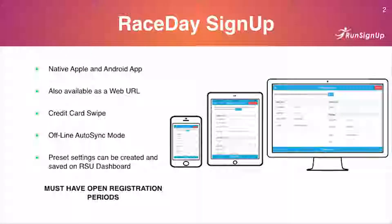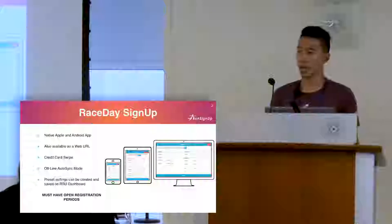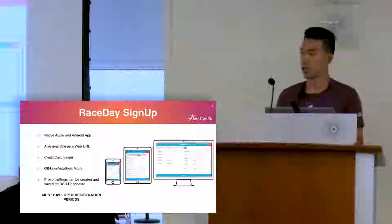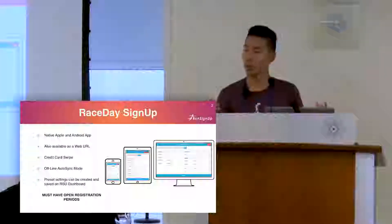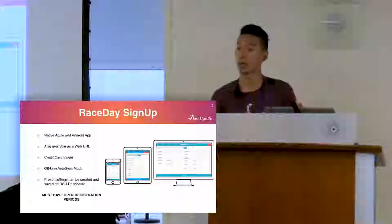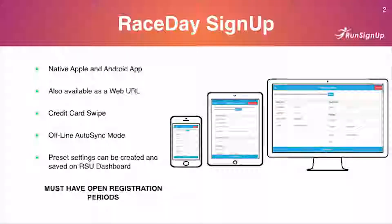The first option we're going to talk about for race day registrations is going to be our sign-up app. This is probably the best way to get your race day registrations. It's a native Apple and Android app, also available as a web URL, and it takes credit card swipes. There are a lot of preset settings that you can create on your dashboard and within the app. We've developed so many things for you guys that there are so many settings — you really have to look into them and find what's best for your race.